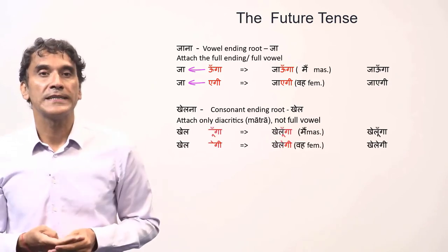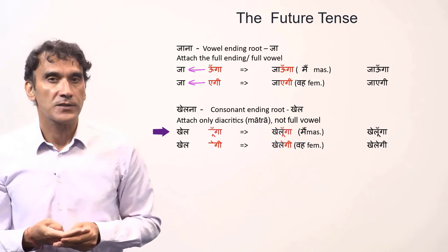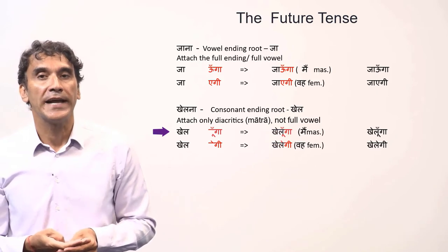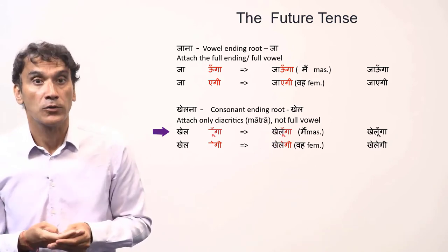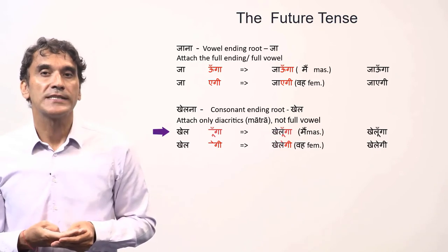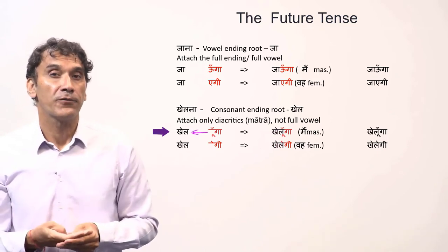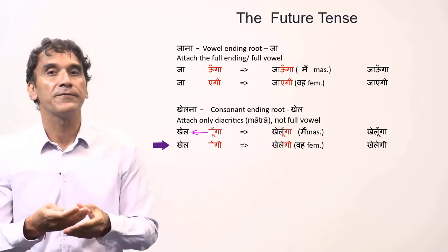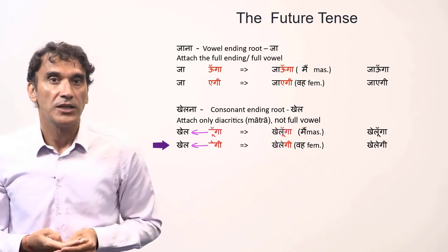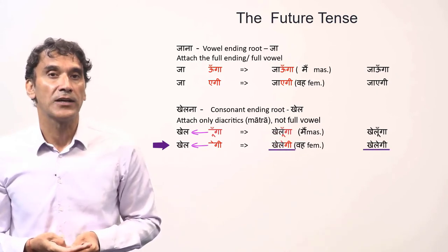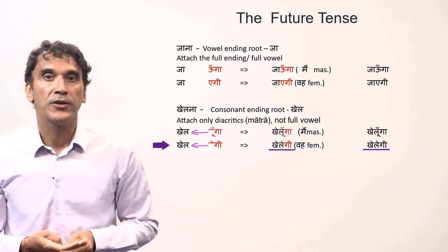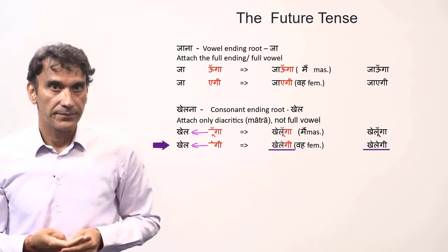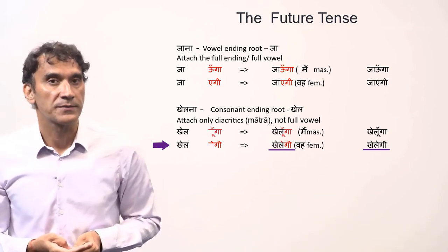For the consonant-ending root, you need to add the diacritic of the first vowel to the root of the verb. For example, for the first person masculine ending 'unga,' you add it to the root to make 'khelunga.' The diacritic for long 'u' is added to the root. Similarly, for the third person feminine you add the ending 'aegi' to the root 'khel' to make 'khelegi' — the diacritic 'a' is added to the root. This pattern follows with all other subject pronouns.